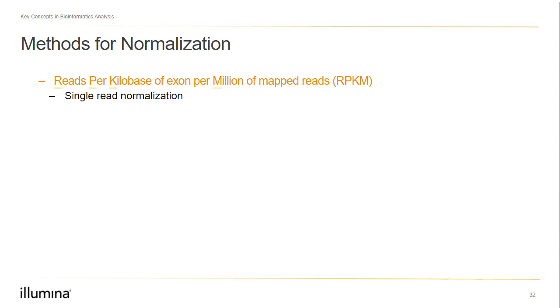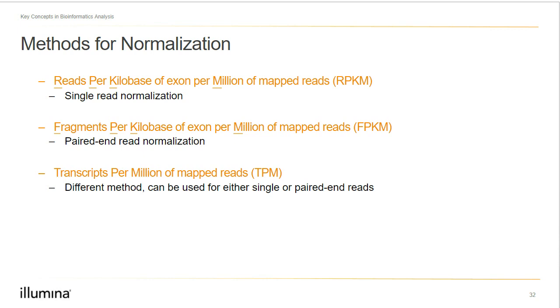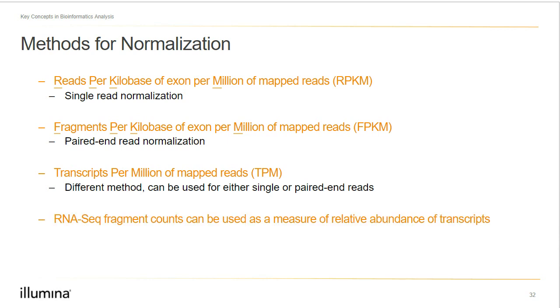Let's talk about how these two normalization methods are combined. RPKM (reads per kilobase of exon per million of mapped reads) takes into account reads mapped and length of the transcript for normalizing single reads. FPKM (fragments per kilobase of exon per million of mapped reads) normalizes in the same manner as RPKM but is specific to paired-end reads. Since RPKM and FPKM are normalized the same way, these counts can be used to compare samples with each other. TPM (transcripts per million of mapped reads) is a different method that can accommodate either single or paired-end reads. Overall, RNA-seq fragment counts can be used as a measure of relative abundance of transcripts. For more information, we have an entire webinar covering RNA-seq analysis in the resources section.